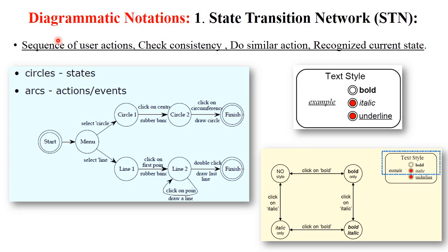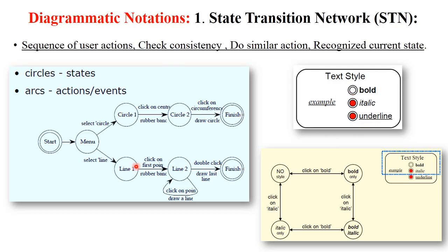The first type of dialogue design notation is diagrammatic notation, and the first example is state transition network. State transition networks represent a sequence of user actions. It checks consistency — whether similar actions will be performed or not — and also recognizes the current state. In the diagram, circles represent the states of the system, and arcs represent the actions or events performed. For example, text type: bold, italic, or underline, selected via radio buttons, can be represented in an STN from start to menu, then to a state for bold format, then finish.